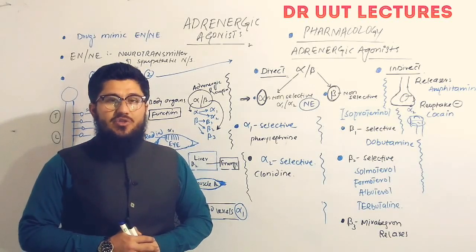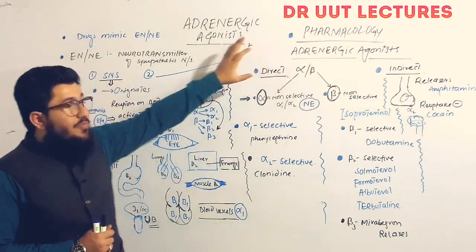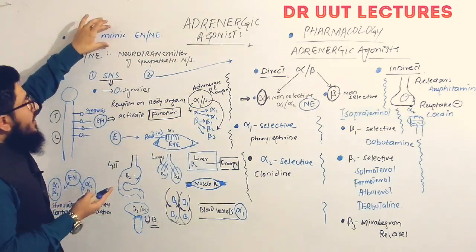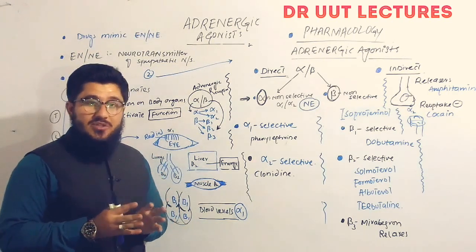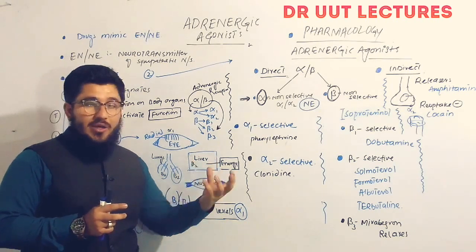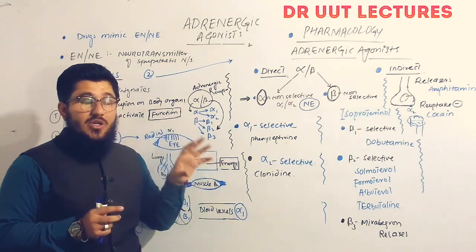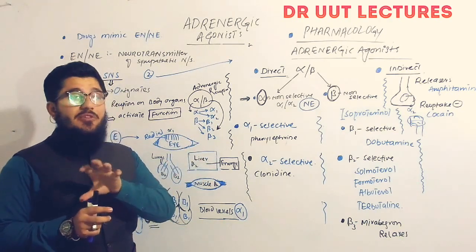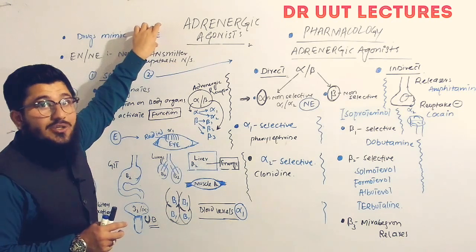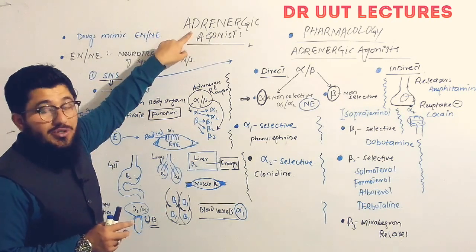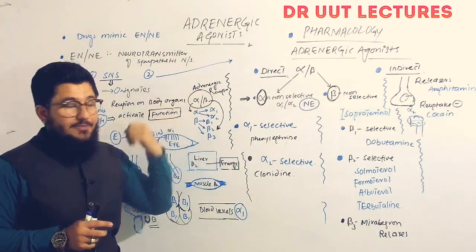In today's lecture we will talk about adrenergic agonists, also known as sympathomimetics. These are drugs that mimic the actions of epinephrine and norepinephrine. When any other drug also performs the functions of epinephrine and norepinephrine, those drugs are known as adrenergic agonists, because they copy the actions of adrenaline and noradrenaline.